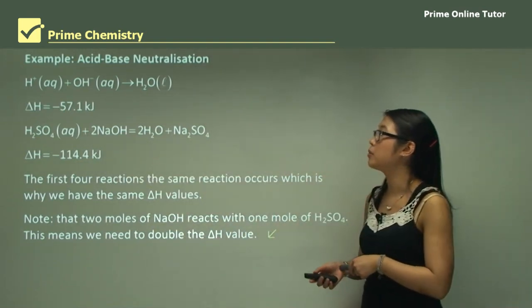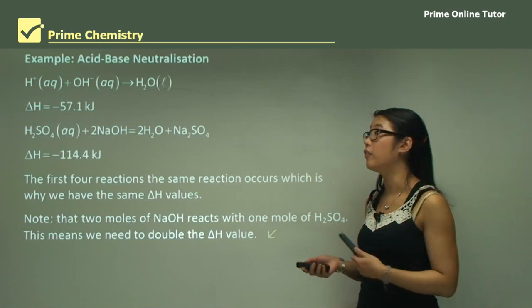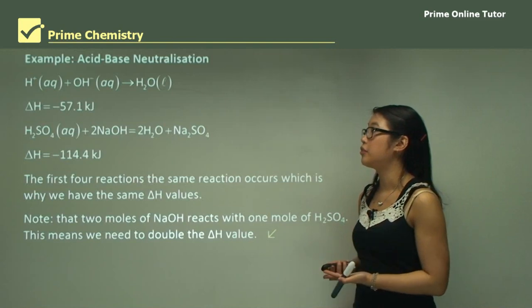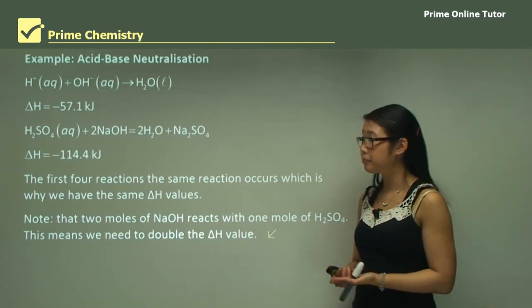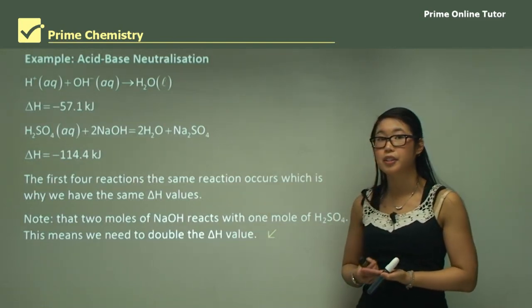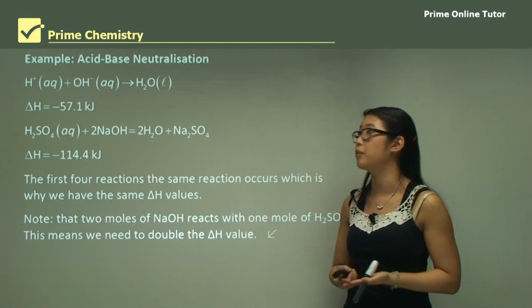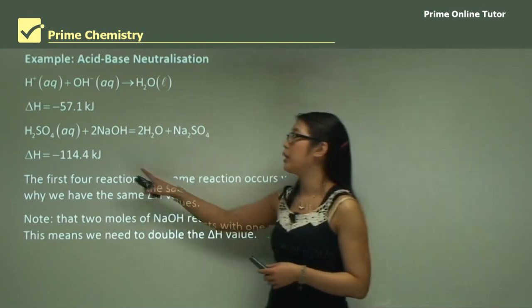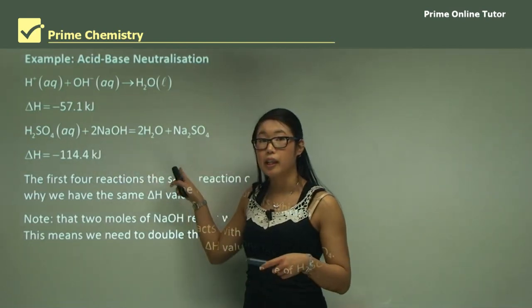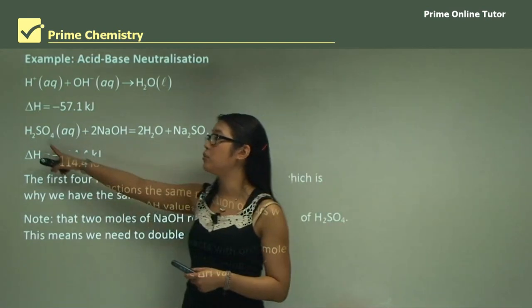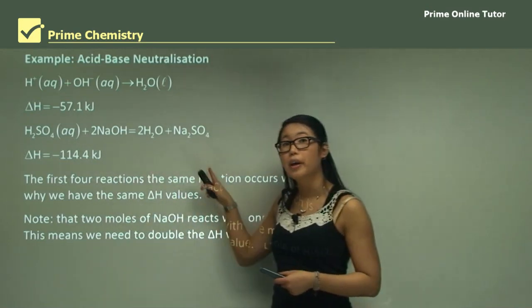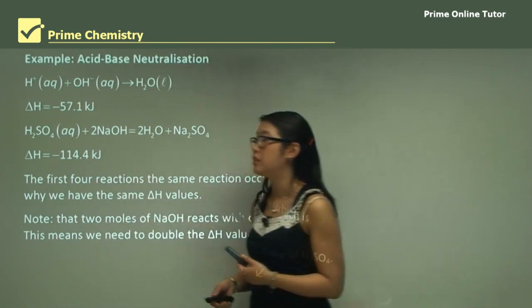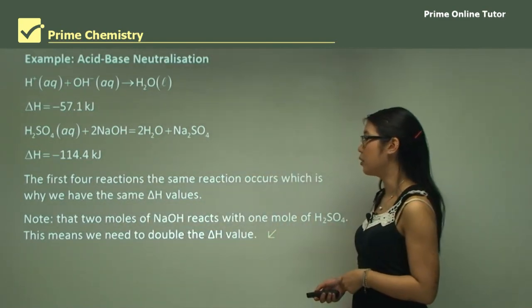To summarize, we looked at combustion and neutralization. Neutralization reactions are generally exothermic, releasing energy, and combustion is always exothermic. In acid-base neutralization, we need to take into account the stoichiometry — how many moles of each reactant are required — and from that we can determine the enthalpy changes accordingly.